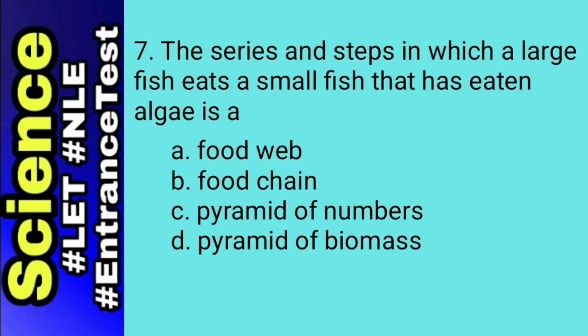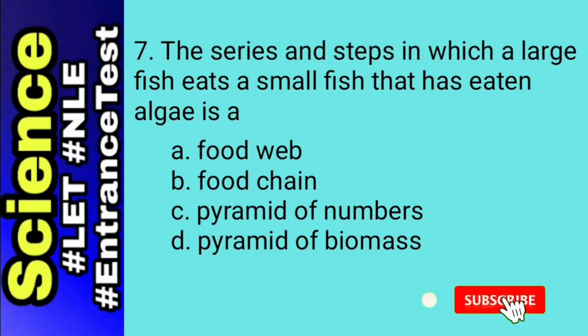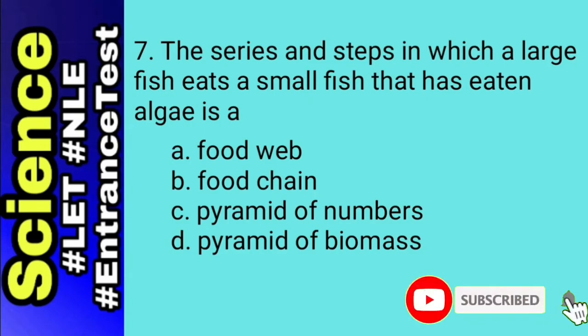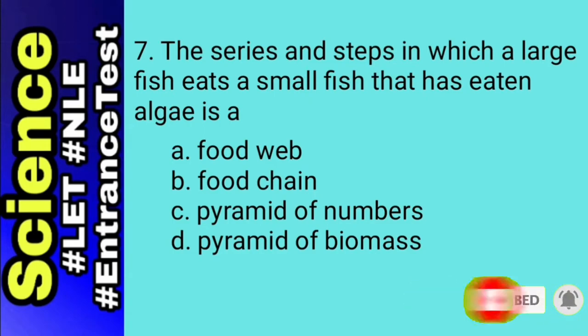For this number, the answer is food chain. A food chain is a series of steps in which organisms transfer energy by eating and being eaten. A food web, on the other hand, contains many food chains, or many animals that eat more than one kind of food.